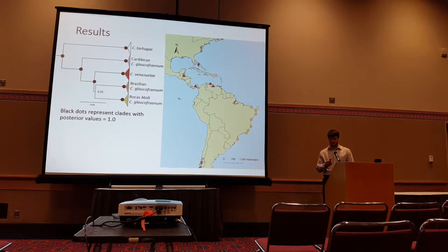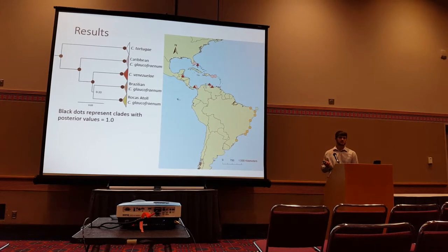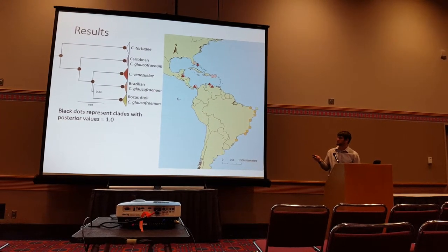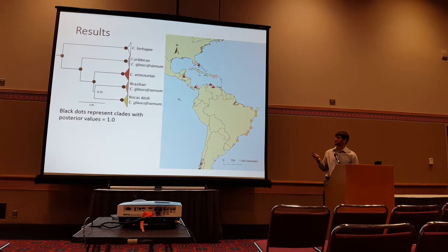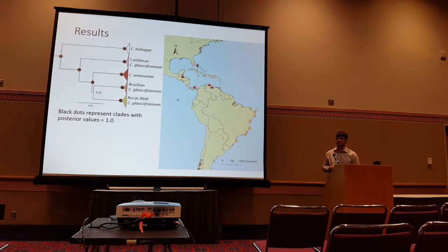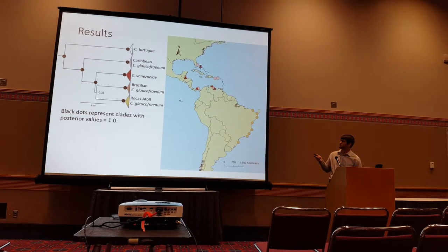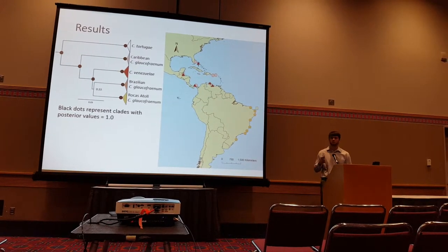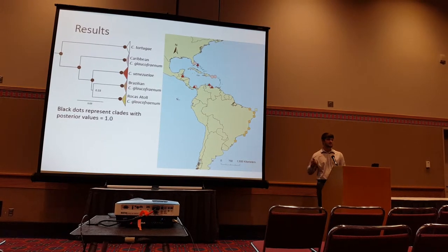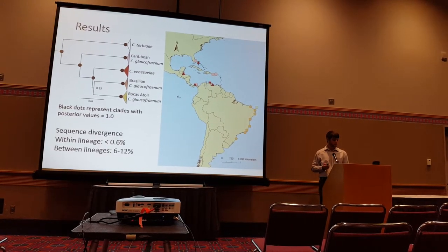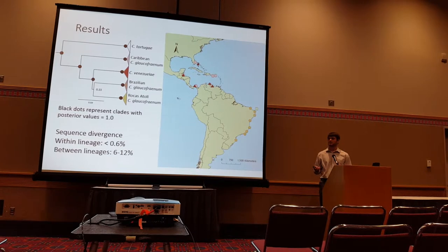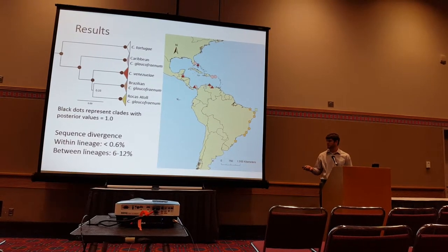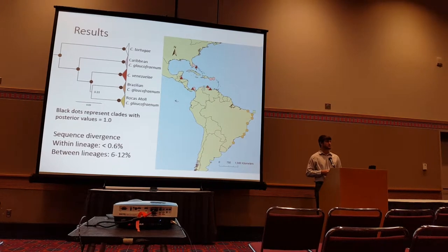What we found is that within our clade of interest, there are actually four lineages. The first is the glochophranum lineage that is exclusive to the Caribbean and occurs in sympatry with venezueli. Across the Amazon barrier, we have a coastal lineage of Brazil, and the oceanic islands, the Rocas Atoll, are also isolated, leading to four distinct well-supported lineages. Sequence divergence within taxa is not very much, but between taxa it ranges from 6% to 12%, which is comparable to species-level divergence in this genus.